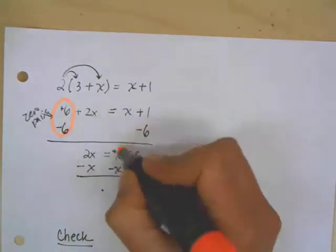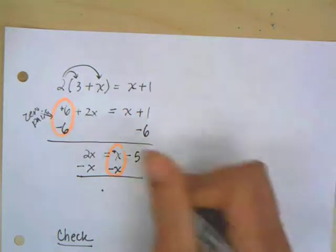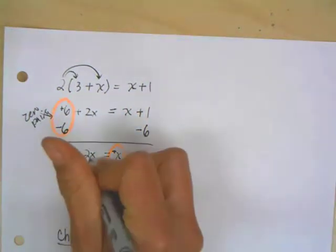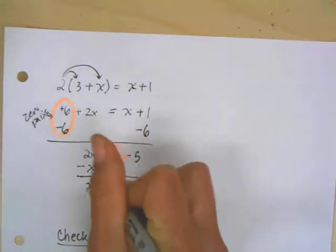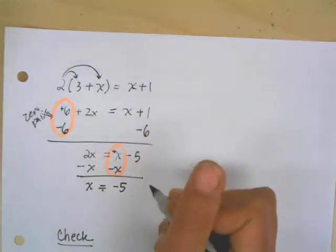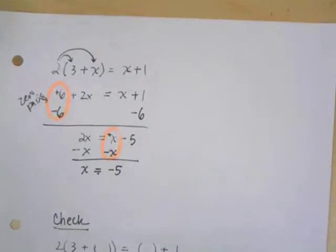And once again, I'm still keeping things balanced, because I'm doing the same thing to both sides. Plus x and minus x, that's another zero pair. So I get 2x minus x is x equals negative 5.